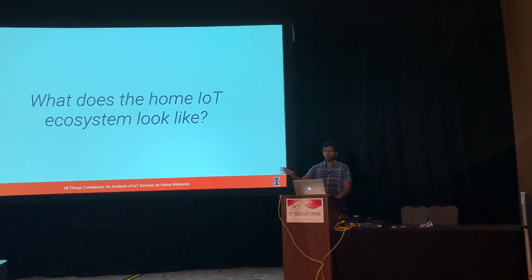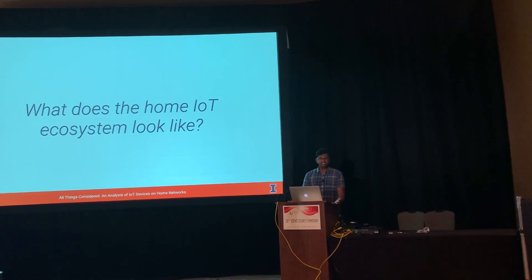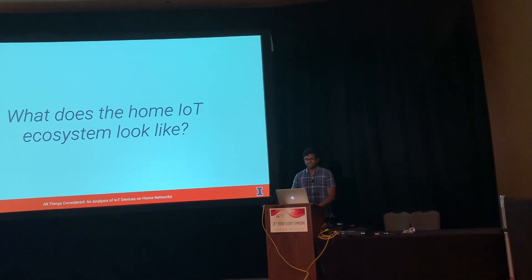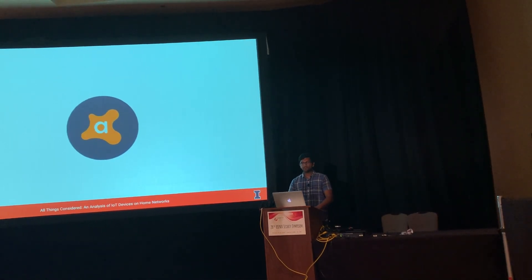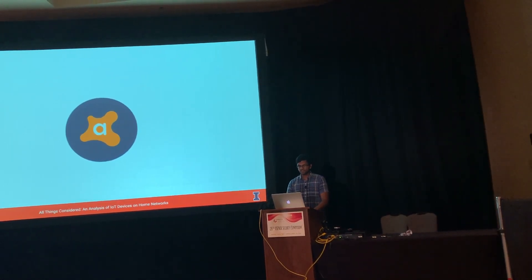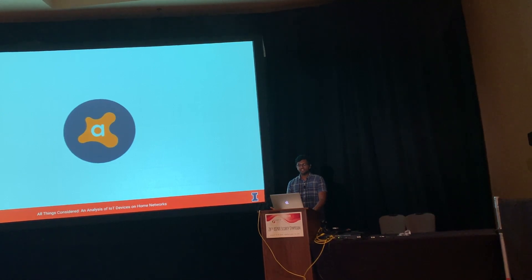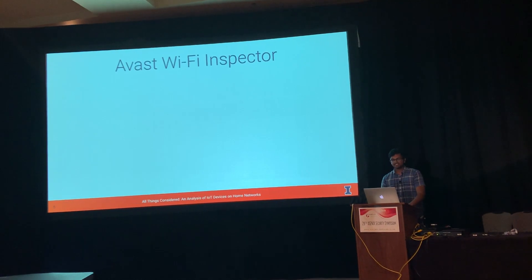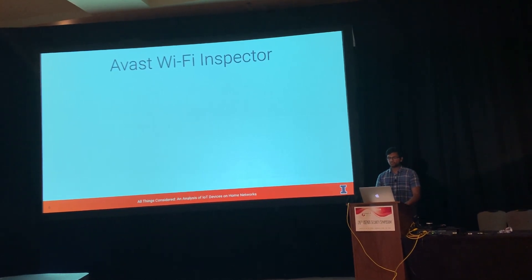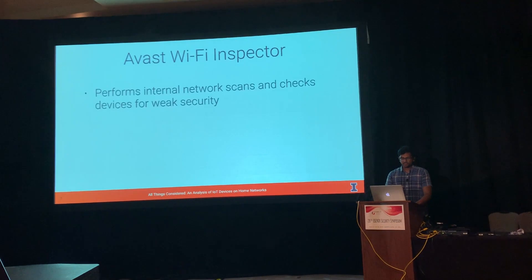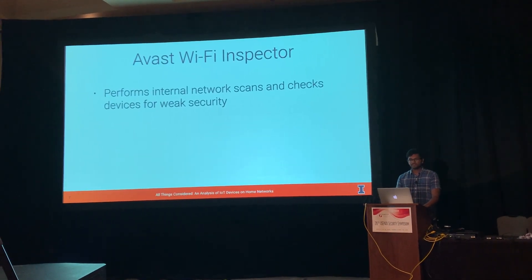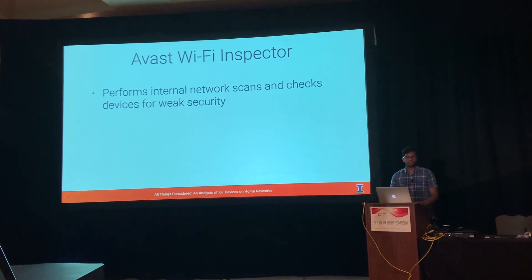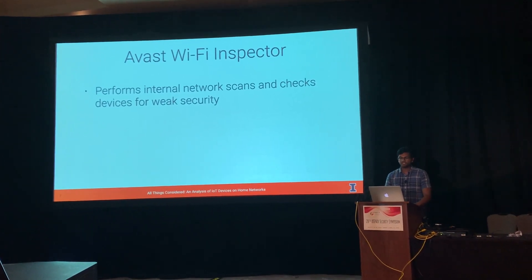What does the home IoT ecosystem look like? We can't publicly scan for these devices, so we needed a different measurement perspective. To get that perspective, we partnered with Avast Software, who is a free antivirus provider whose home security software runs in millions of homes worldwide. As part of their home security software package, Avast products come packaged with a tool called Wi-Fi Inspector. Wi-Fi Inspector performs internal network scans of the local network and checks devices for indicators of weak security, then alerts the user so they can address whatever problems exist on their network.